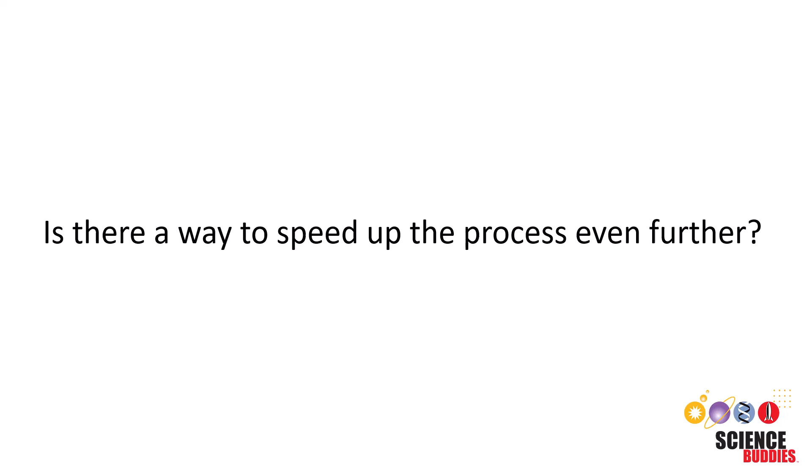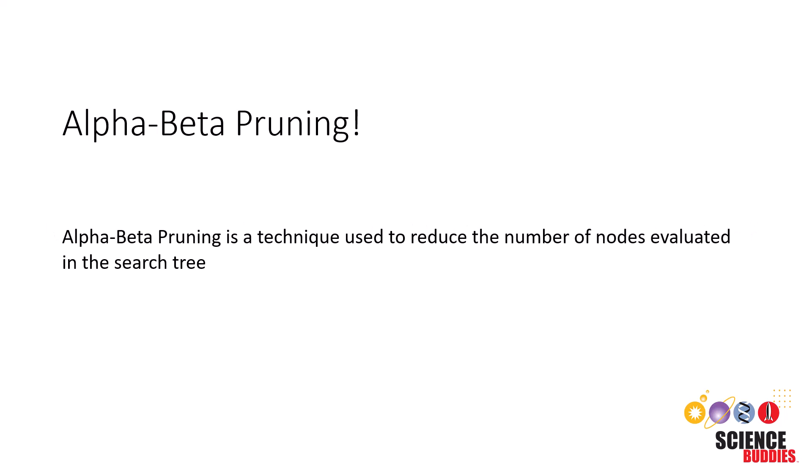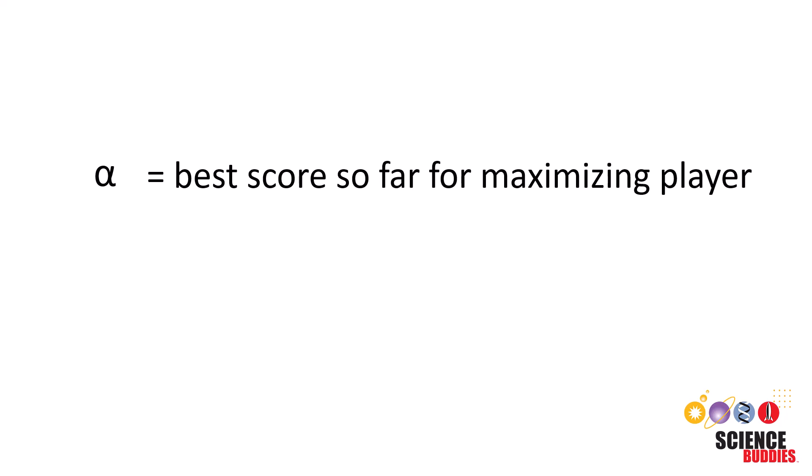So, is there a way to speed up the process even further? It's called alpha-beta pruning. Alpha-beta pruning is a technique used to reduce the number of nodes evaluated in the search tree. It maintains two values, alpha and beta, for each node in the tree. Alpha represents the best score that the maximizing player can achieve so far, and beta represents the best score that the minimizing player can achieve so far.